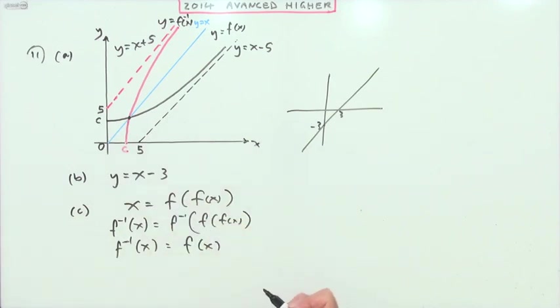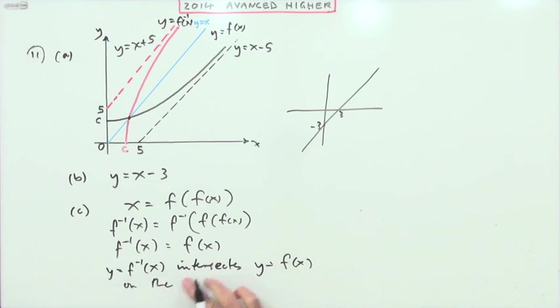So what does it say? Why does your diagram show that at least one solution? Well f inverse of x, y equals that, intersects y equals f(x) on the line y equals x would be the answer to that.